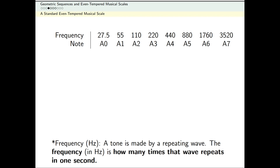Notice in this sequence, to go from one A to the next A, the frequency doubles. So this is a geometric sequence, and the common ratio is 2.